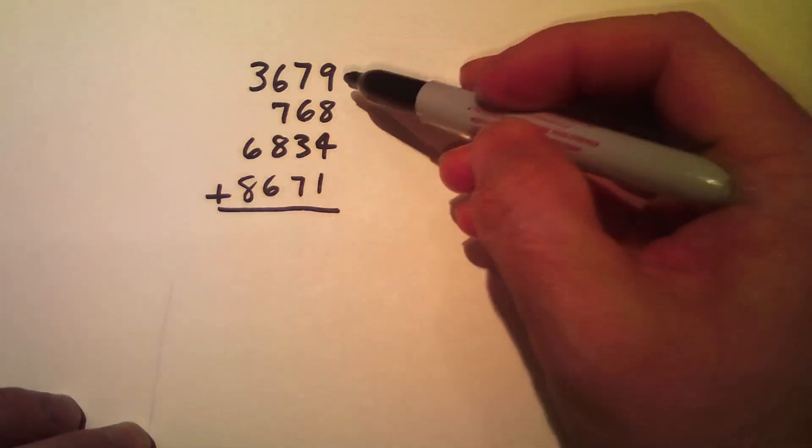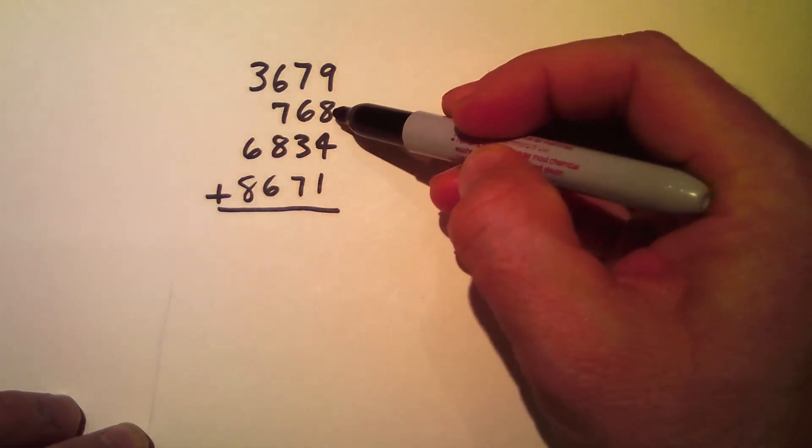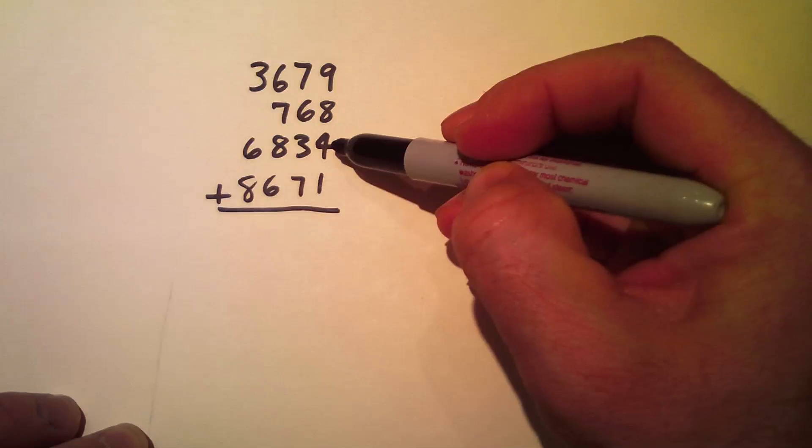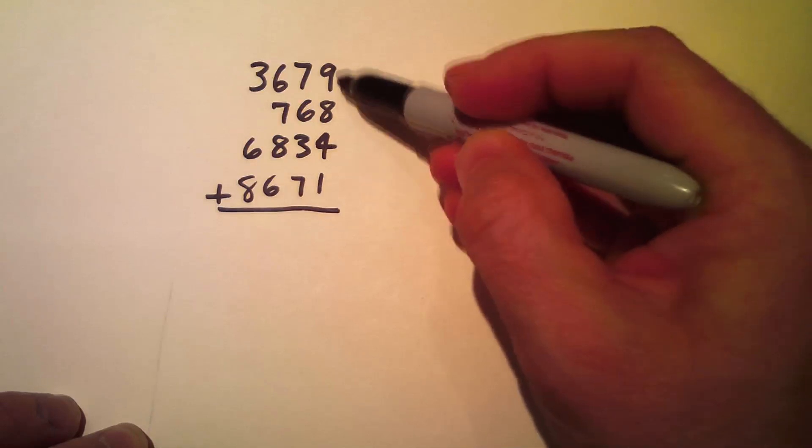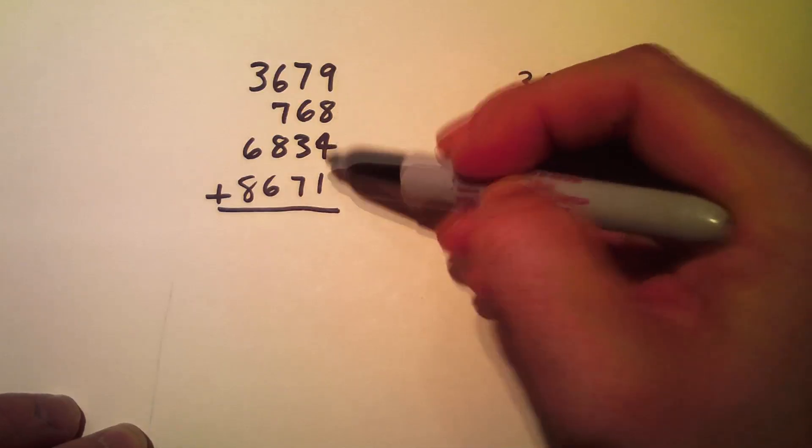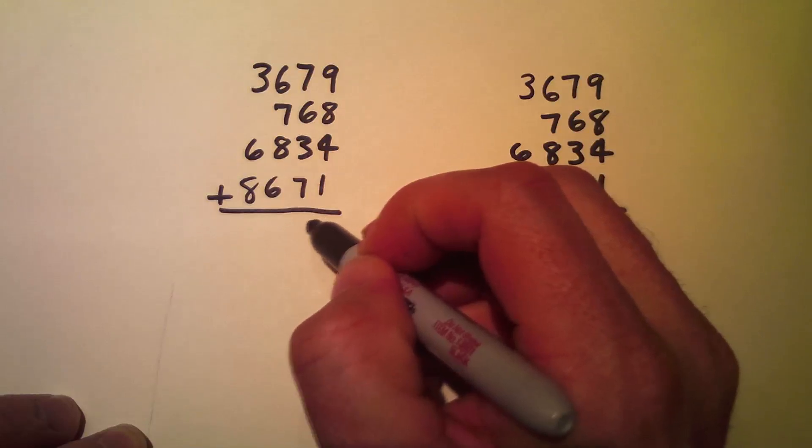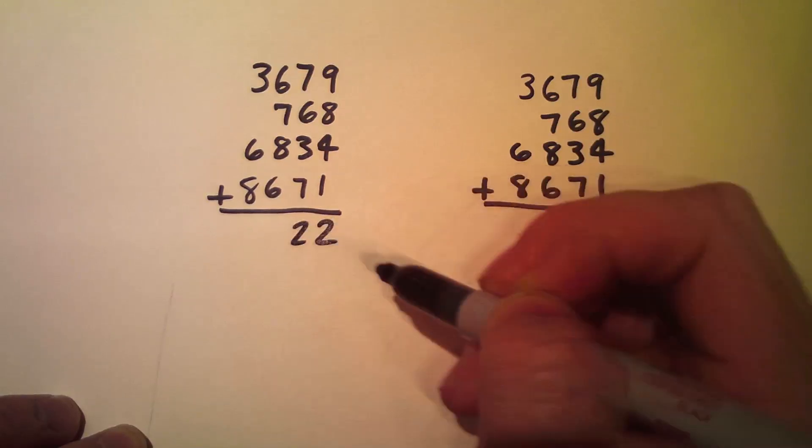This is, 9 plus 8 is 17, plus 4 is 21, plus 1 is 22. So I have 22. So that's a partial sum.